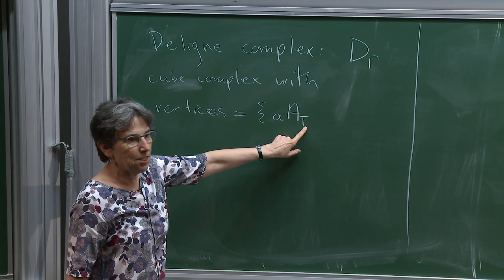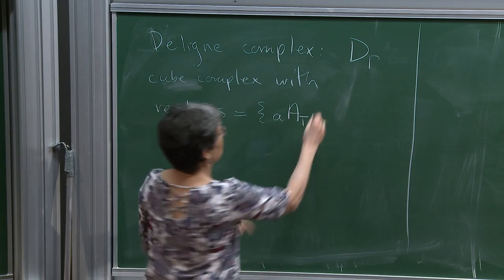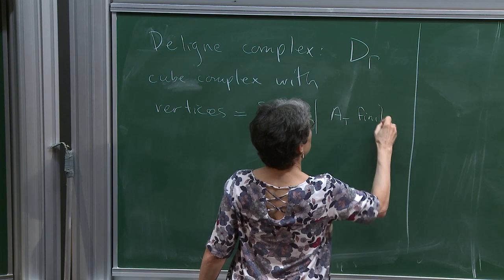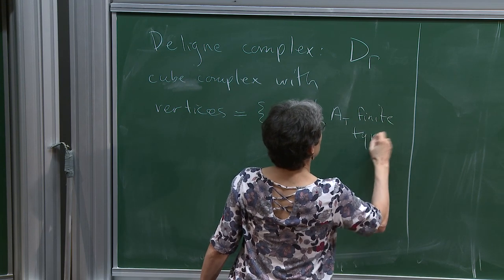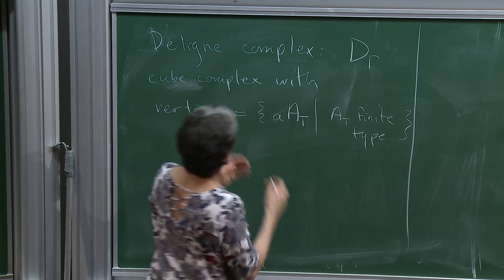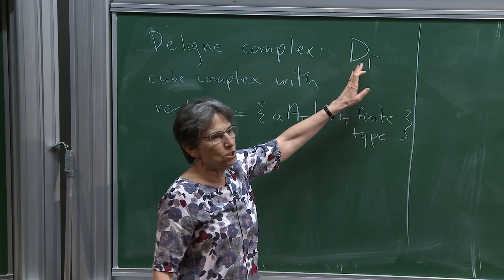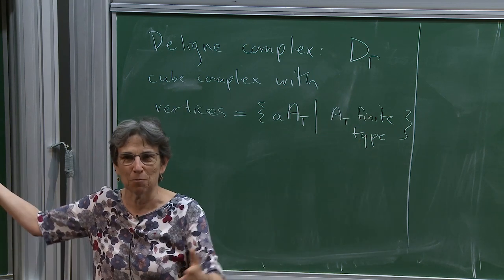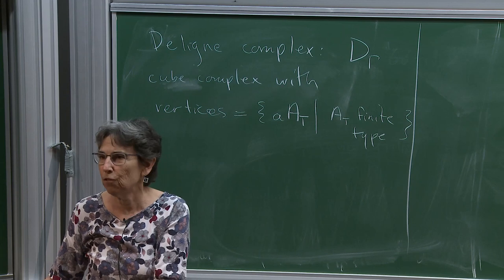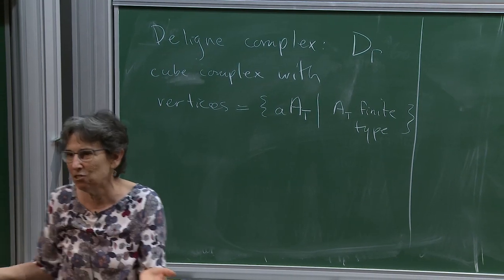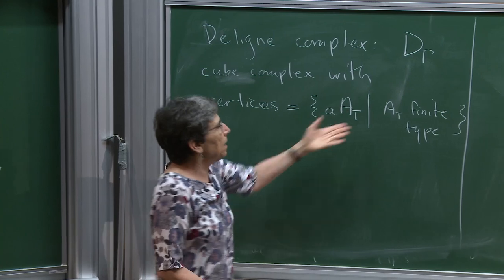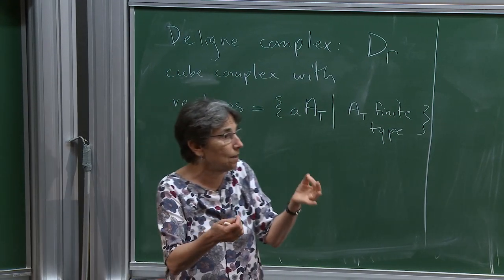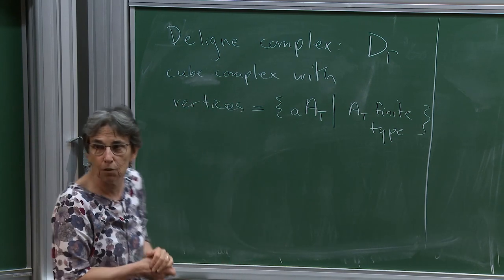T is a subset of S and we look at the subgroup generated by T, where we require that A_T is finite type. We're working with A(γ) infinite — the full group is infinite type, otherwise these aren't interesting. But it could have finite type pieces in it; for example, any edge generates a finite type subgroup.